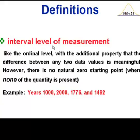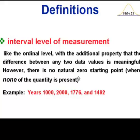Another example of interval level of measurement data are temperatures. If you consider temperatures in the Fahrenheit system, the freezing point of water is 32 degrees and boiling is 212. But in Celsius, freezing is zero and boiling is 100 degrees. So the zero starting point would be different depending on whether you're in Fahrenheit or Celsius.